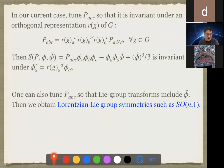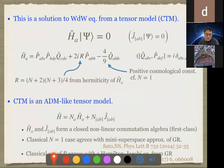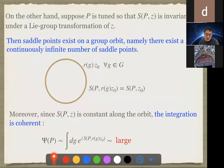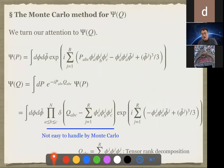One can actually tune P so that this is invariant under the group. Then this exponent is invariant under the group transformation of phi, and you can expect the appearance of a peak of the wave function. One can also include phi_2dot as part of the group transformation, and then one can find Lorentzian-type symmetry and the corresponding peak.